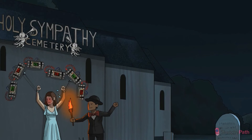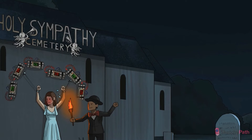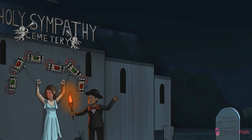Hyperthyroidism goes hand-in-hand with increased sympathetic nervous system activity, highlighted by the name of the cemetery. The interplay between thyroid hormone and adrenergic action is complex, and thyroid hormone exerts many adrenergic-like effects on its own, without help from the sympathetic nervous system. For example, part of thyroid hormone's action on cardiac myocytes is to regulate calcium cycling and increase heart rate and contractility. Thyroid hormone is known to increase beta-adrenergic receptor expression in various tissues — hence those beta-bugled cherubs decorating the cemetery wall. Think of hyperthyroidism as a state in which the body's response to catecholamines is exaggerated.